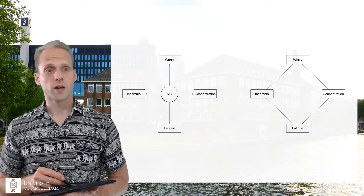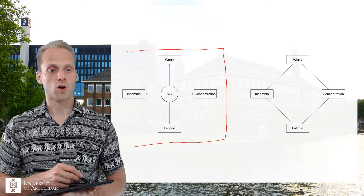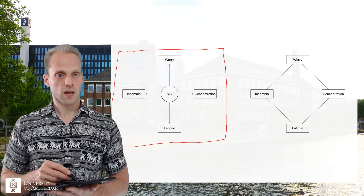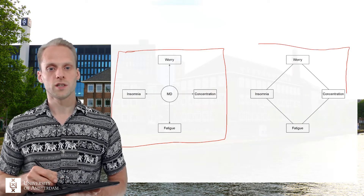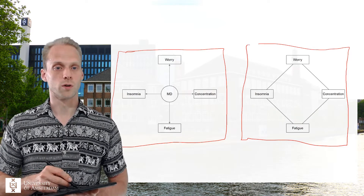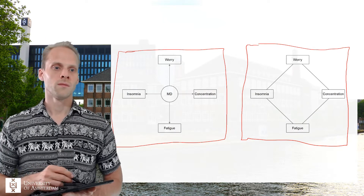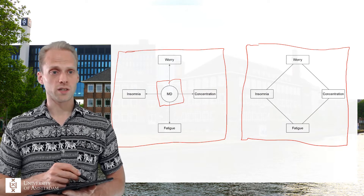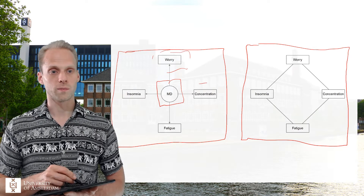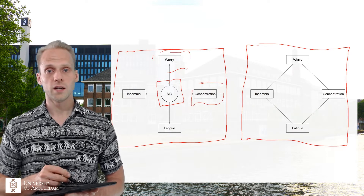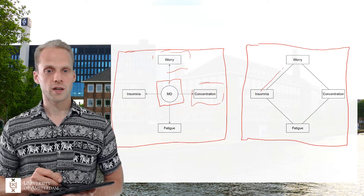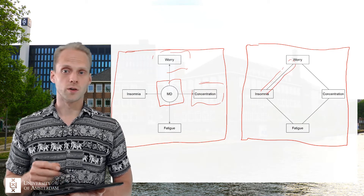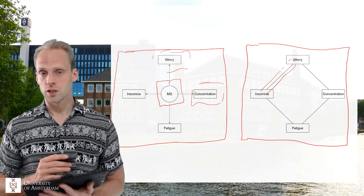We have two different frameworks. We have the latent variable model, which is the common framework that we've been using in psychological research for the last 100 years or so. And we have the network model, which is a more recent framework. In the latent variable model, a latent variable causes covariation on these indicators, which are otherwise locally independent. In the network model, we have direct interactions between observed variables, and we generally don't have latent variables.